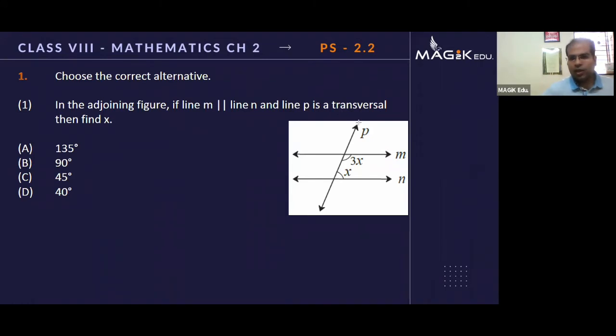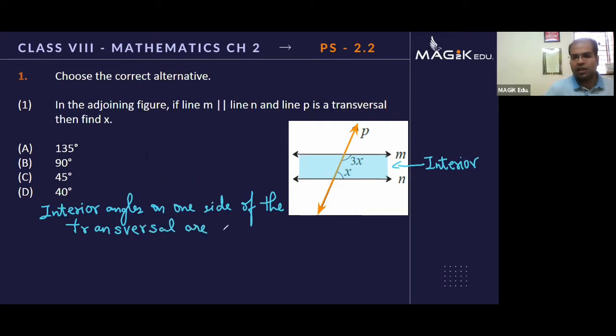Our first challenge is to identify who is the transversal. I've just colored the line which is intersecting two other lines, so that is acting as my transversal. I'll be highlighting the zone where x and 3x lie. As you can see, x and 3x lie in the interior and they are interior angles on one side of the transversal. The property is that interior angles on one side of the transversal are supplementary.